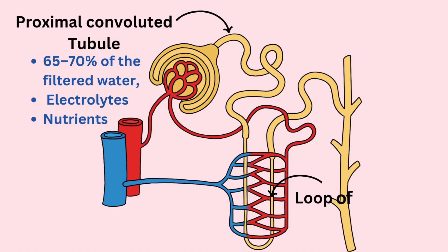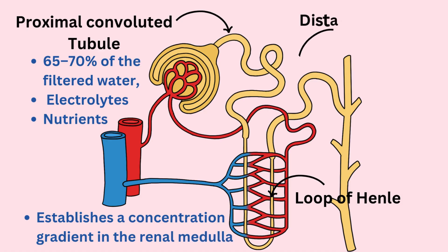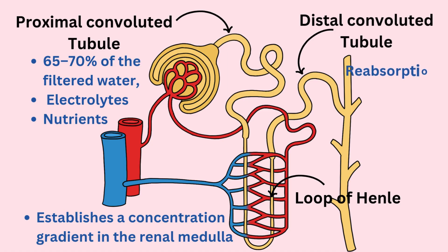The loop of Henle establishes a concentration gradient in the renal medulla, crucial for water and electrolyte reabsorption. Fine-tuned reabsorption of electrolytes and water occurs in the distal convoluted tubule under hormonal control.